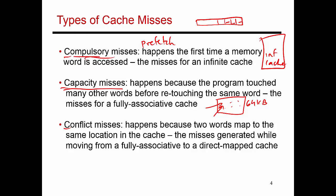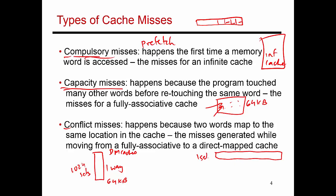A fully associative cache is the opposite extreme from a direct-mapped cache. For a 64-kilobyte cache with 64-byte blocks, a direct-mapped cache has 1,024 sets and one way, while a fully associative cache has one set and 1,024 ways. Both have the same capacity of 1,024 blocks at 64 bytes each. You can also design a 4-way cache with 256 sets — all these caches have the same capacity but sit at different points in the design spectrum.